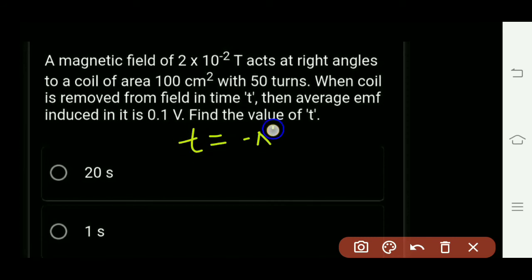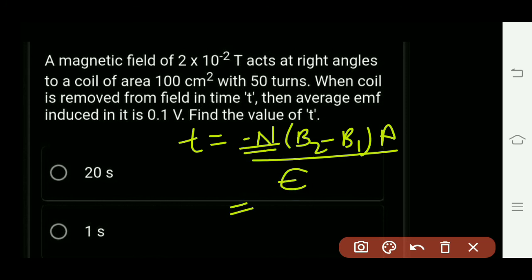...N(B₂ - B₁)A cos 0° (that means 1) divided by E. Okay, so the value of n is given - 50 turns. B₂ minus B₁, that means 0 minus 2 × 10⁻²...